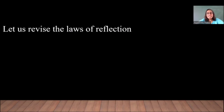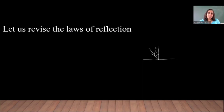Now, let us revise the laws of reflection. Suppose this is a plane and this is a normal, meaning this is perpendicular to the plane. If this incident ray makes an angle with the normal, that angle we call the angle of incidence, generally denoted by i or theta. The angle made by the incident ray with the normal is the angle of incidence — that means we measure the angle of incidence from the normal. The angle of reflection is also measured from the normal.